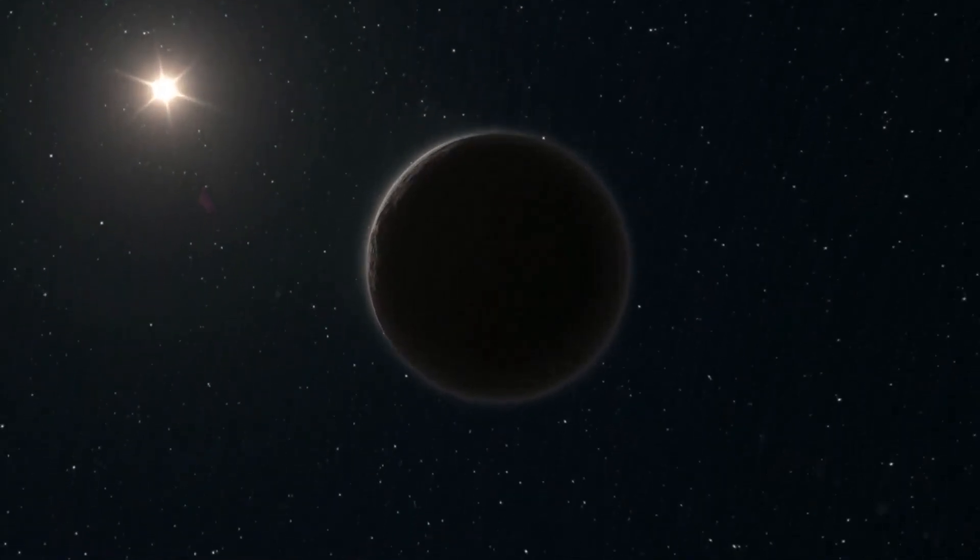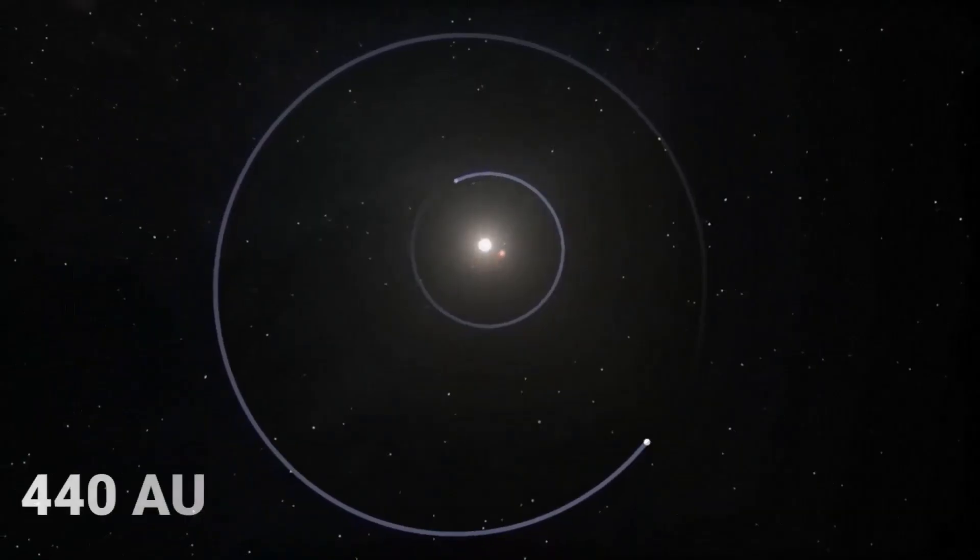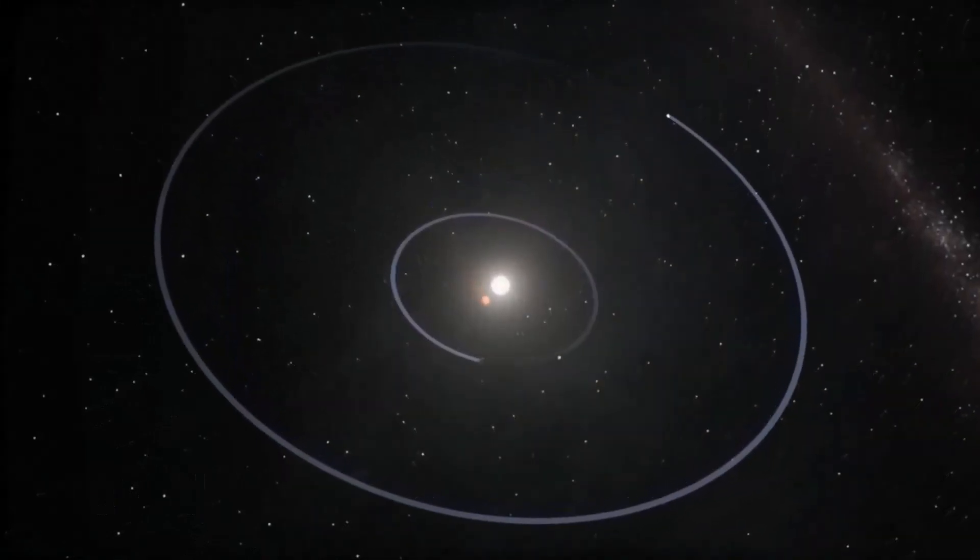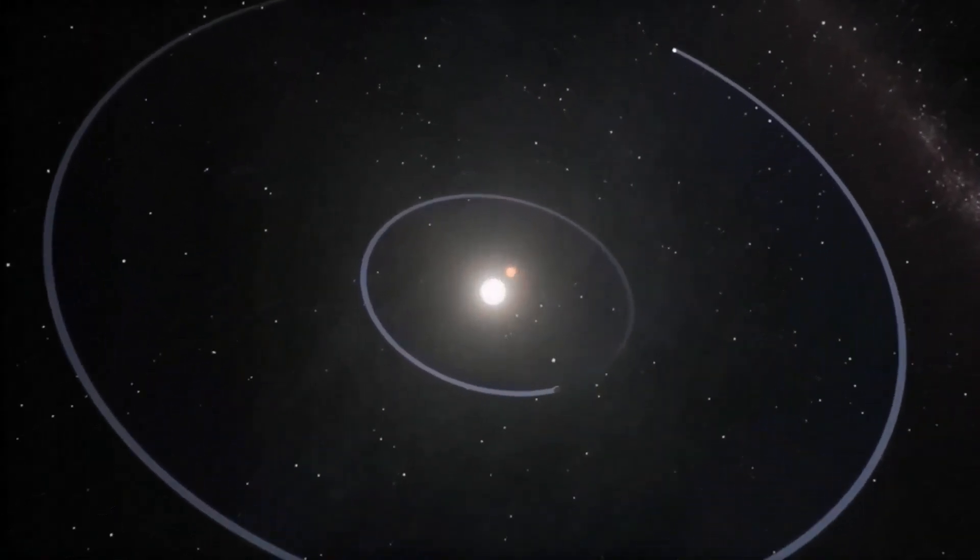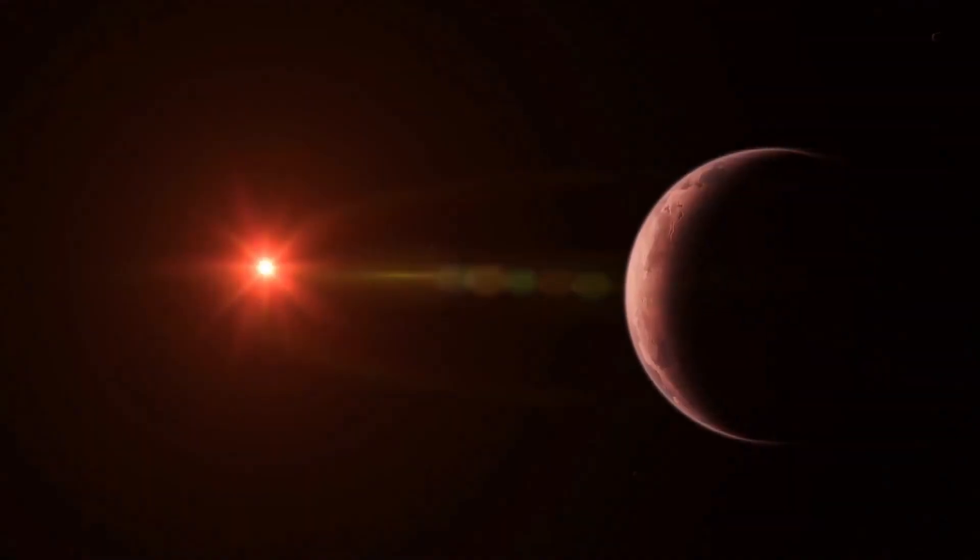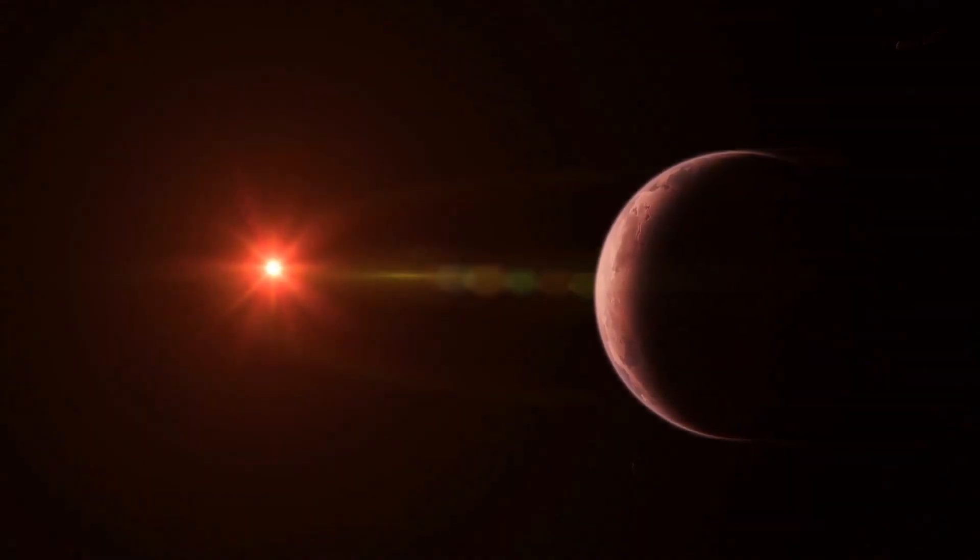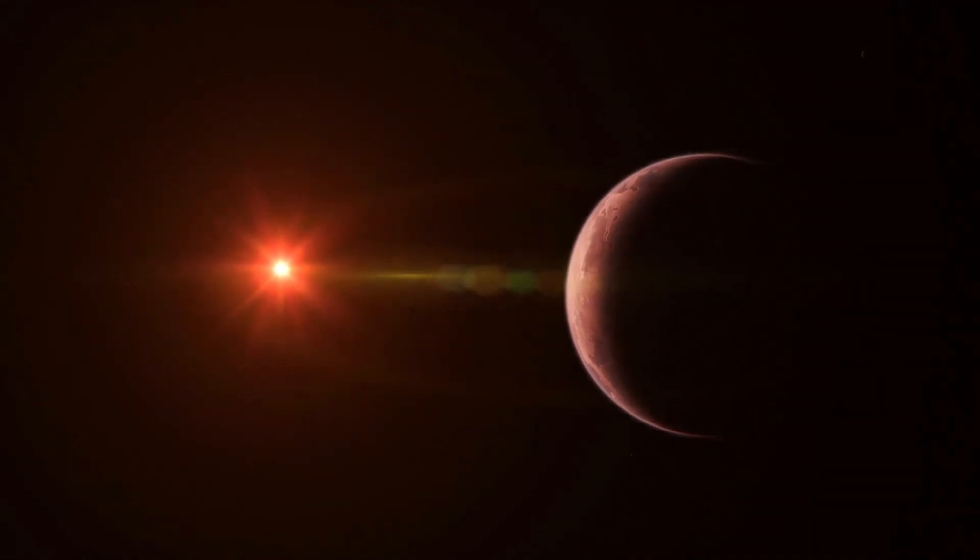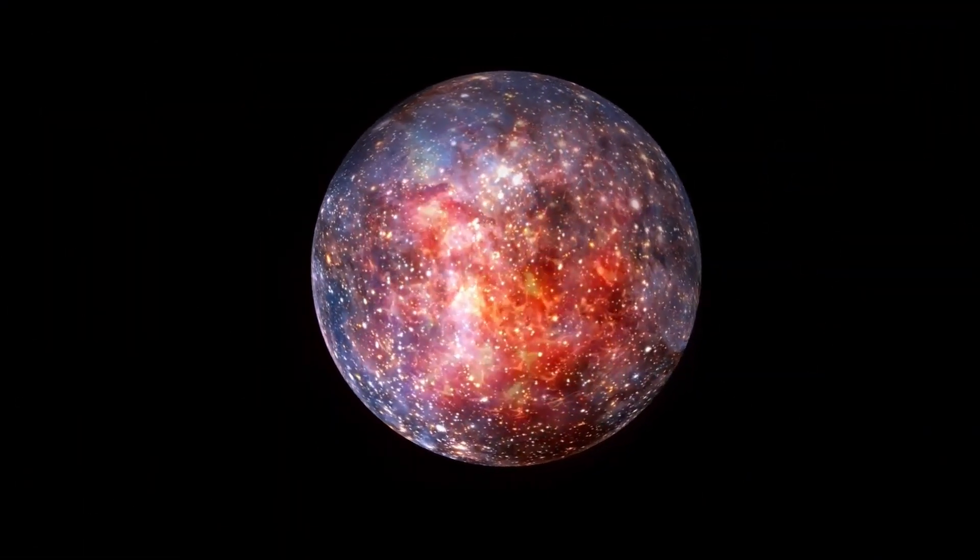Also, this exoplanet, or brown dwarf, is relatively small for its kind. This suggests that it's in the early stages of its life. Similar to how Webb studied WASP-39b, it also examined the peculiar atmosphere of the brown dwarf.